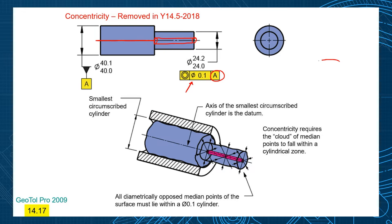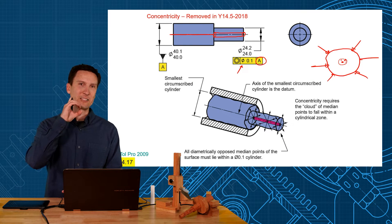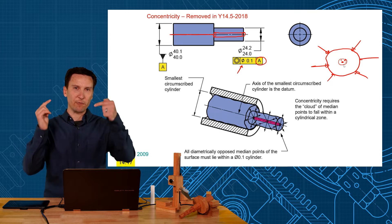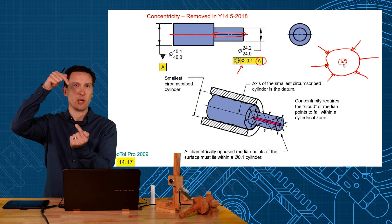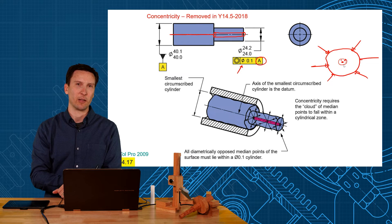If you have an irregularly shaped feature from an imperfect part and you take the opposing midpoints across different cross sections, each midpoint falls at a slightly different location. That cloud of points has to fall within the cylindrical tolerance zone — an infinite number of opposing median points along each cross section must stay within there.